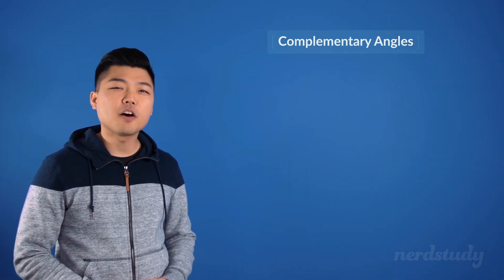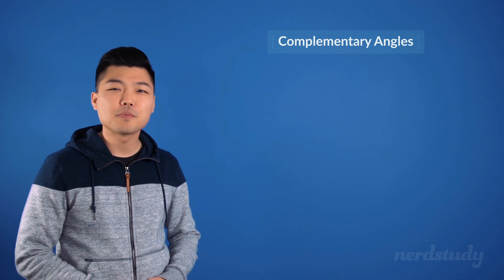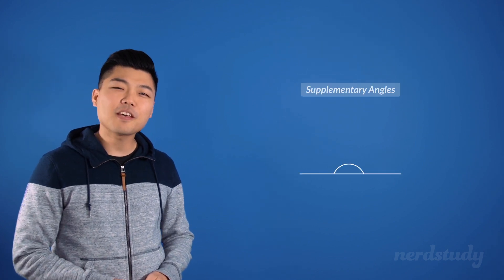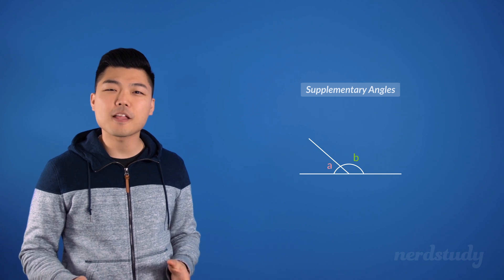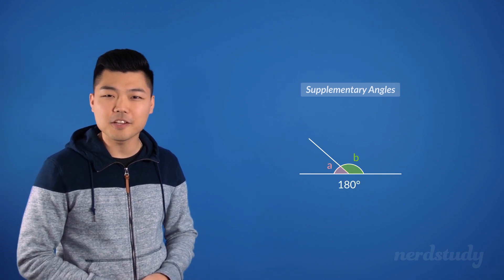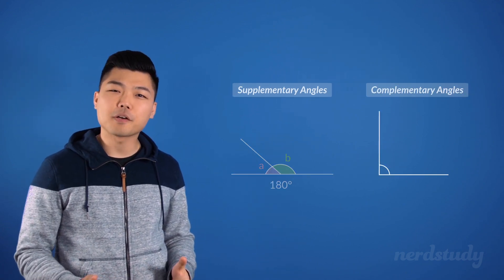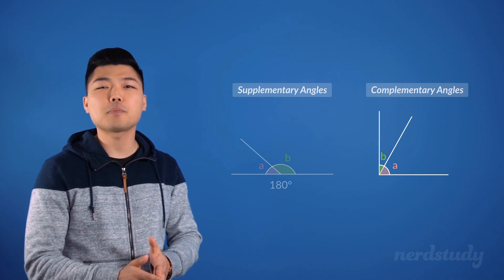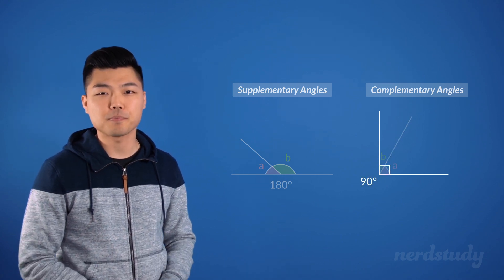Lastly, we've got complementary angles. These are kind of like supplementary angles, only that instead of requiring two angles that add up to 180 degrees, complementary angles require two angles to add up to 90 degrees.